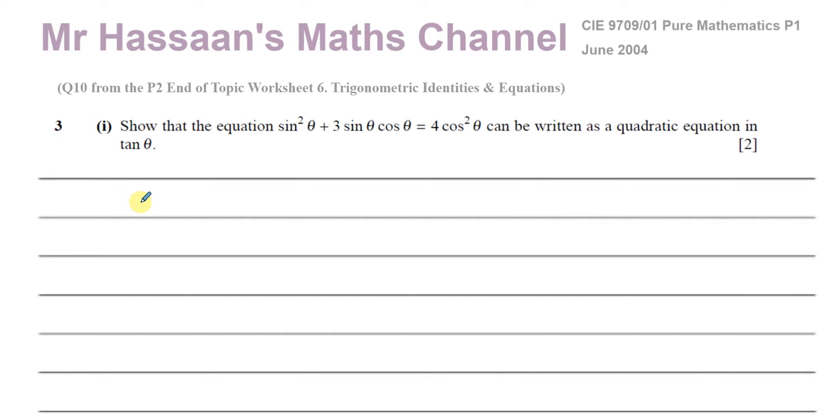So now, as I was saying, this is a question from my end-of-topic worksheet, question number 10, and it happens also to be a question from the Cambridge June 2004 AS paper one, question number 3 from that paper. It says, show that the equation sin²θ + 3 sin θ cos θ = 4 cos²θ can be written as a quadratic equation in tan θ.